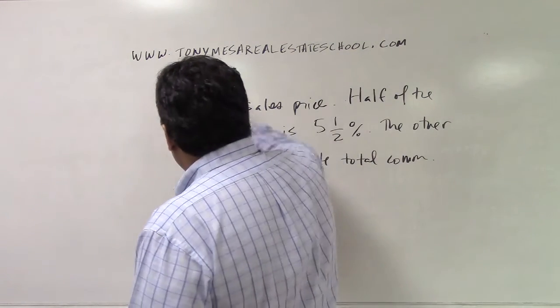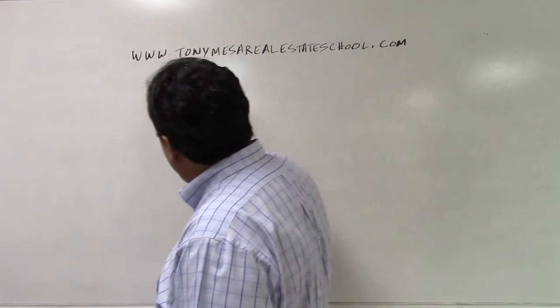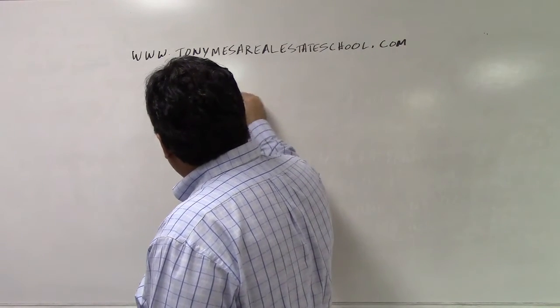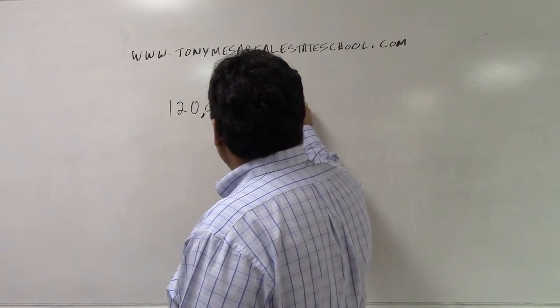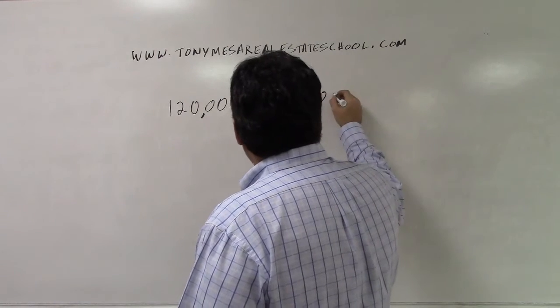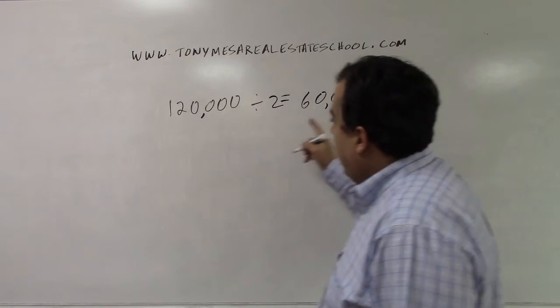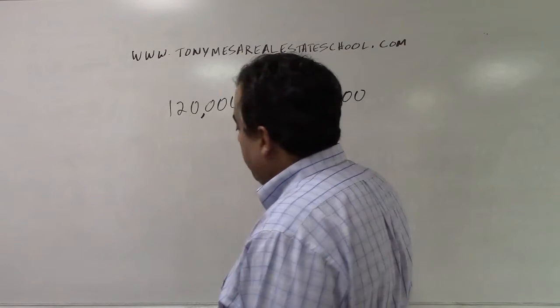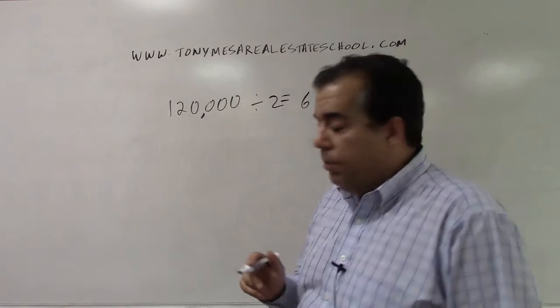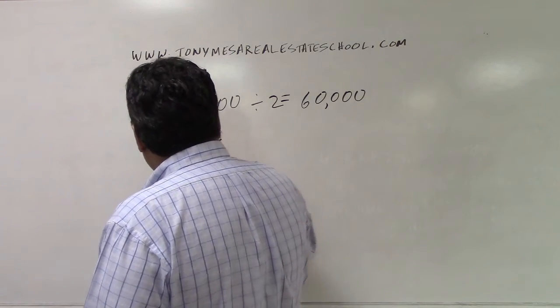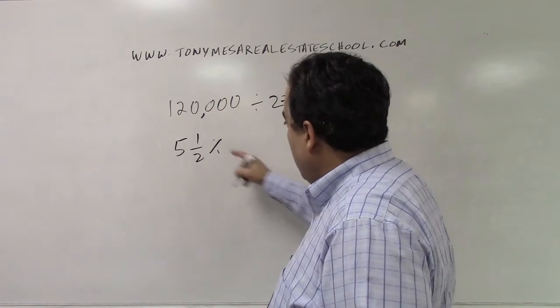I'm going to erase this so I can write bigger. We have a sales price of $120,000. On half of that — so divided by two — $60,000 — the commission is 5.5%. On the other half, the other $60,000, it's 6.5%.